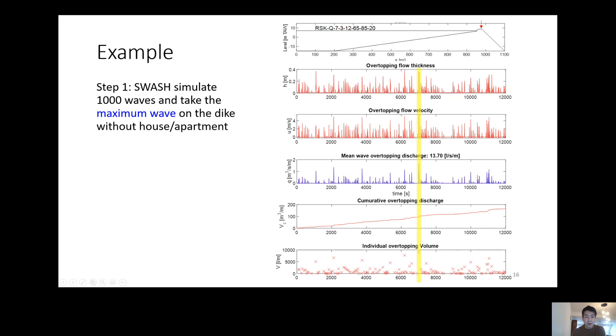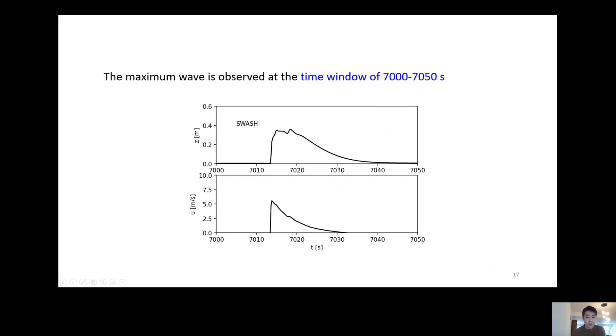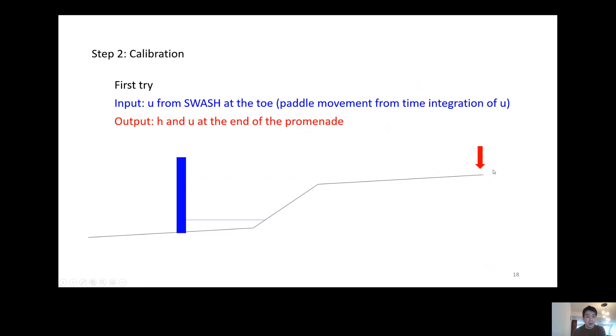This is an example of how the calibration method works. The figure shows the output of SWASH. The yellow marked time window indicates the target wave, namely maximum wave. This figure shows the time series of flow depth and the flow velocity of the maximum wave. As the first step, velocity obtained from SWASH is used for the paddle movement close to the toe.